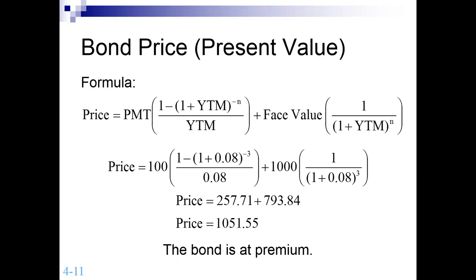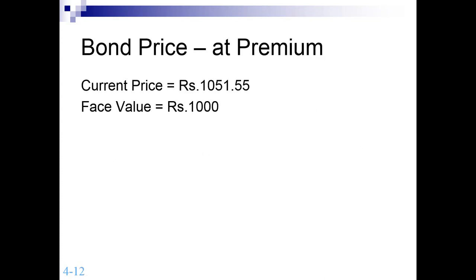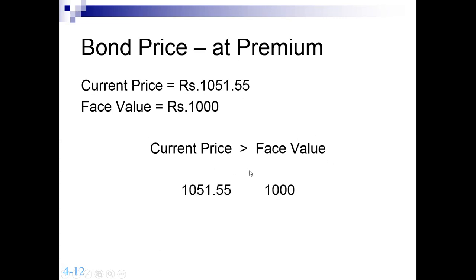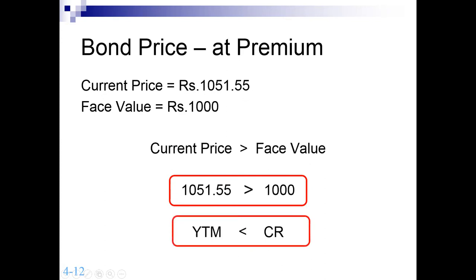When the bond is at a premium, the price of the bond is more than the face value, as you can see. The current price is 1,051 while the face value is 1,000. This situation arises because whenever YTM is less than the coupon rate — whenever the investor's required return is less than the coupon rate offered by the company — the bond will always be priced at a premium.